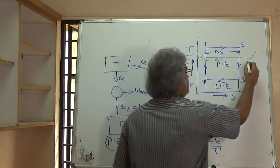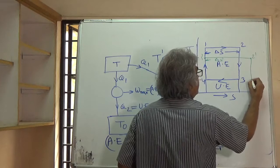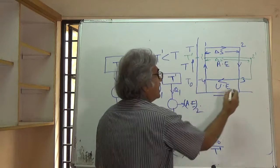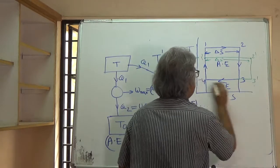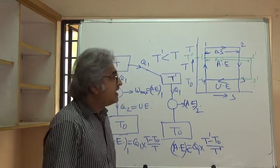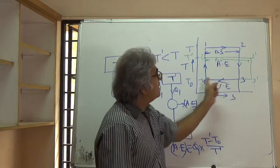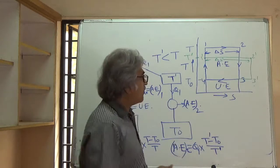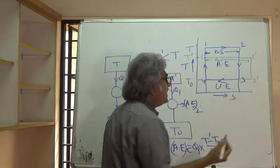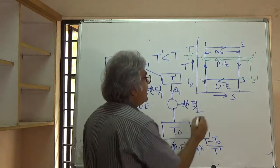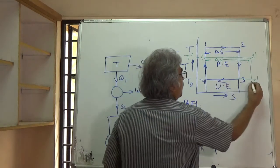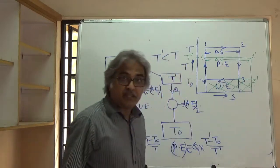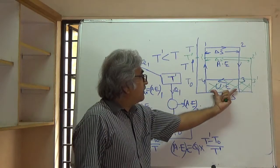In the remaining process the cycle comes down, with 3 dash returning to 4. This was the initial cycle; this is the new cycle. The heat rejected in the new case is from 3 dash to 4, and this entire area represents the heat rejected, which is the unavailable energy. You can see that the earlier unavailable energy was smaller, and now it has increased — so unavailable energy has increased.